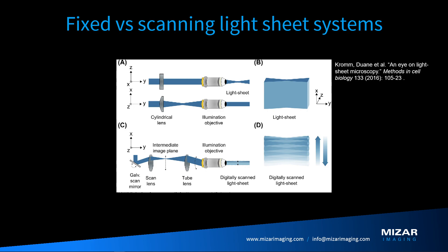We chose to go with the cylindrical lens-based system because we wanted to keep the power density as low as possible. With a scanning-based system the power density within the beam is necessarily much higher, because the dwell time of the beam in any one spot is going to be much lower than in the cylindrical lens-based system.